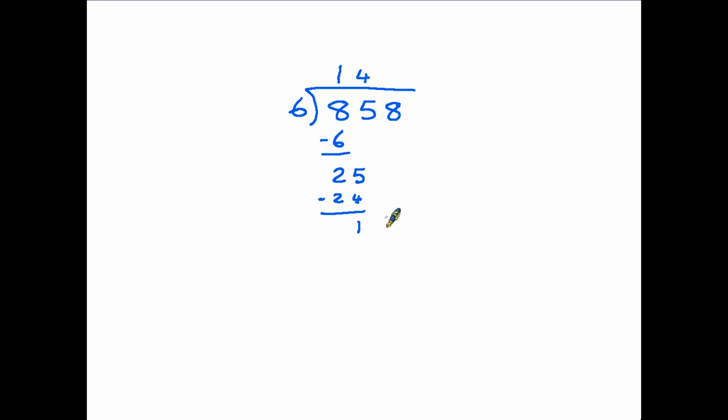The next number we are dealing with is the eight. That comes down the page and our next question is how many sixes are there in 18? The answer is three and six threes are exactly 18. So once again we take it away and we get zero. There are no other numbers to bring down. We've reached the end of our sum.